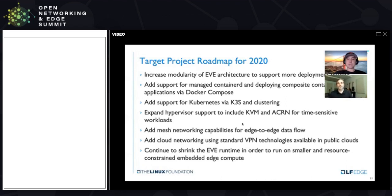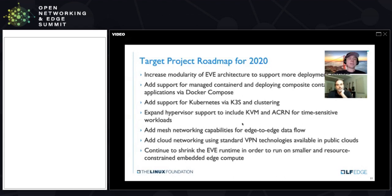One exciting item was integrating KVM and Acorn hypervisors into EVE. EVE began as a technology based on the Xen hypervisor, but from the beginning we wanted it to be hypervisor agnostic. We integrated KVM pretty quickly. The fact that Intel donated Acorn — a hypervisor specifically aimed at industrial and real-time use — to Linux Foundation accelerated our integration with Acorn.